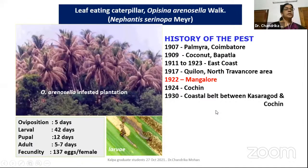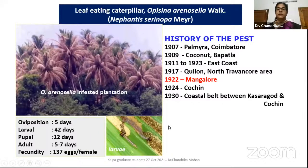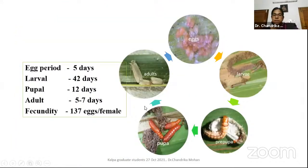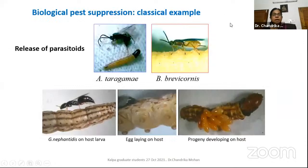The next pest is the leaf-eating caterpillar, Opisina arenosella — also a defoliator affecting the leaves. It was first reported in 1907 on palmyra palms in Coimbatore, then in 1909 on coconut in Bapatla, Andhra Pradesh. By 1930, it had spread throughout Kerala. Biological suppression is the classical example for management of this pest. A lot of work was done on biocontrol aspects. The total life cycle is completed in about two to two and a half months.